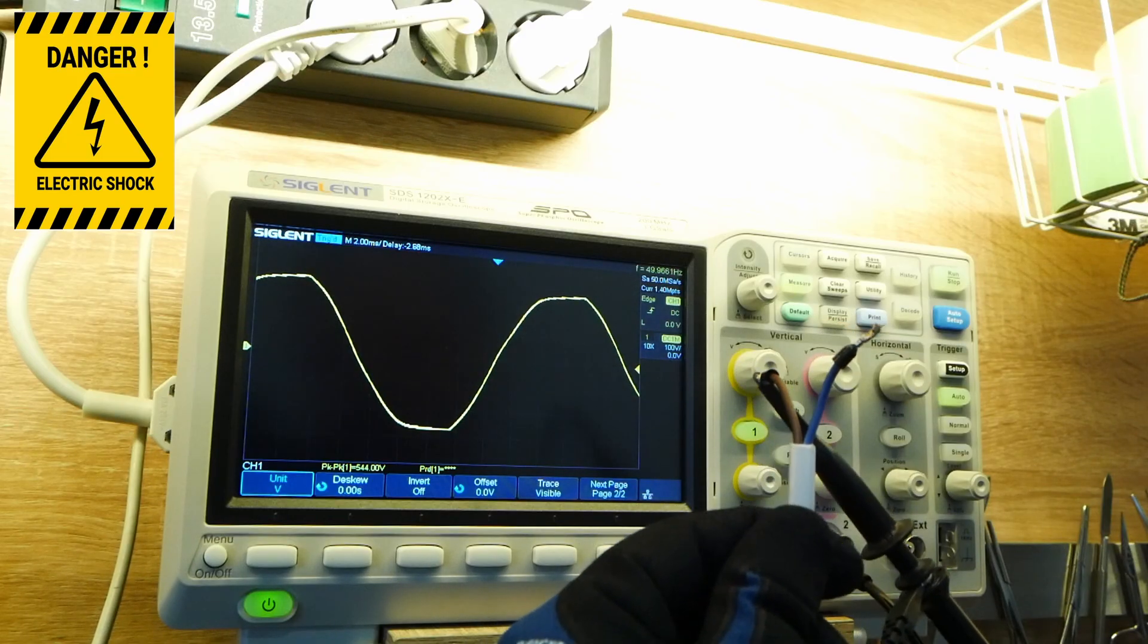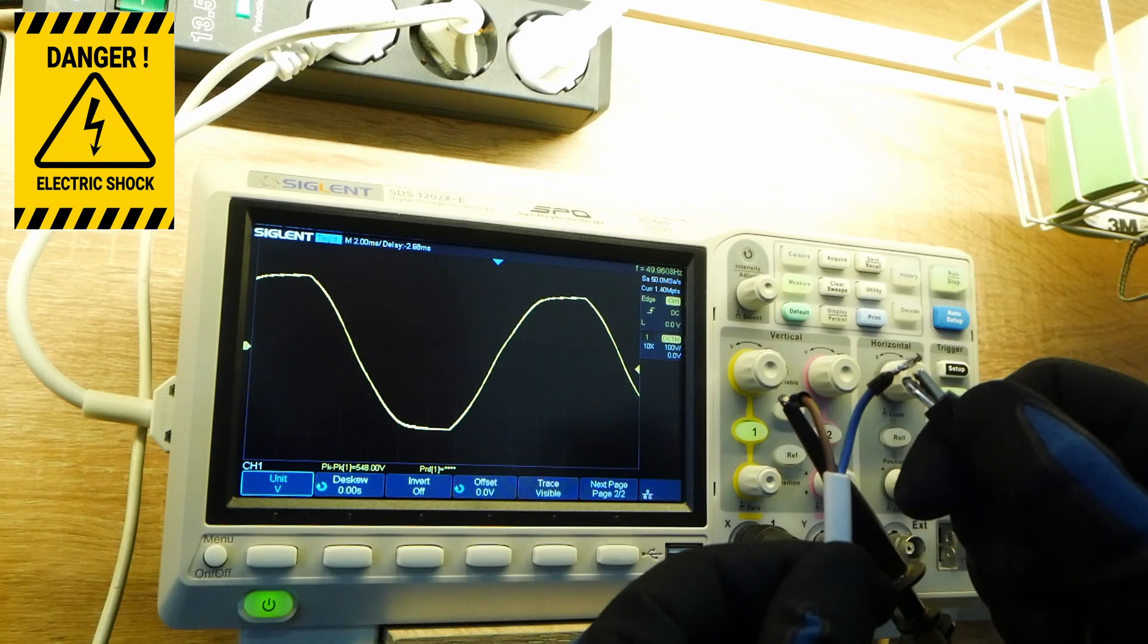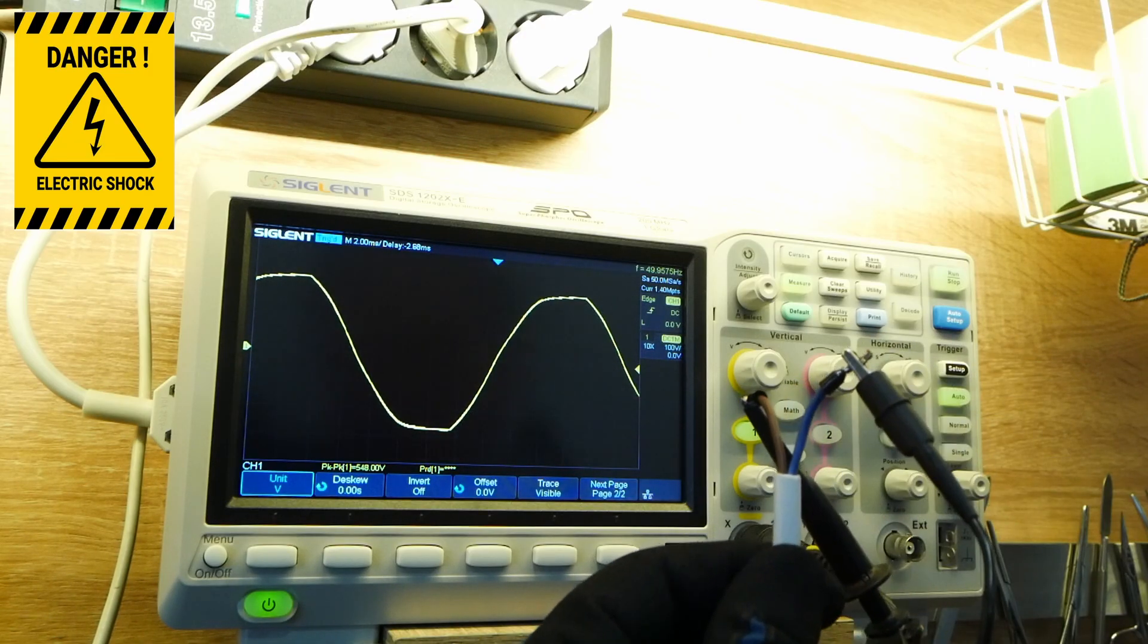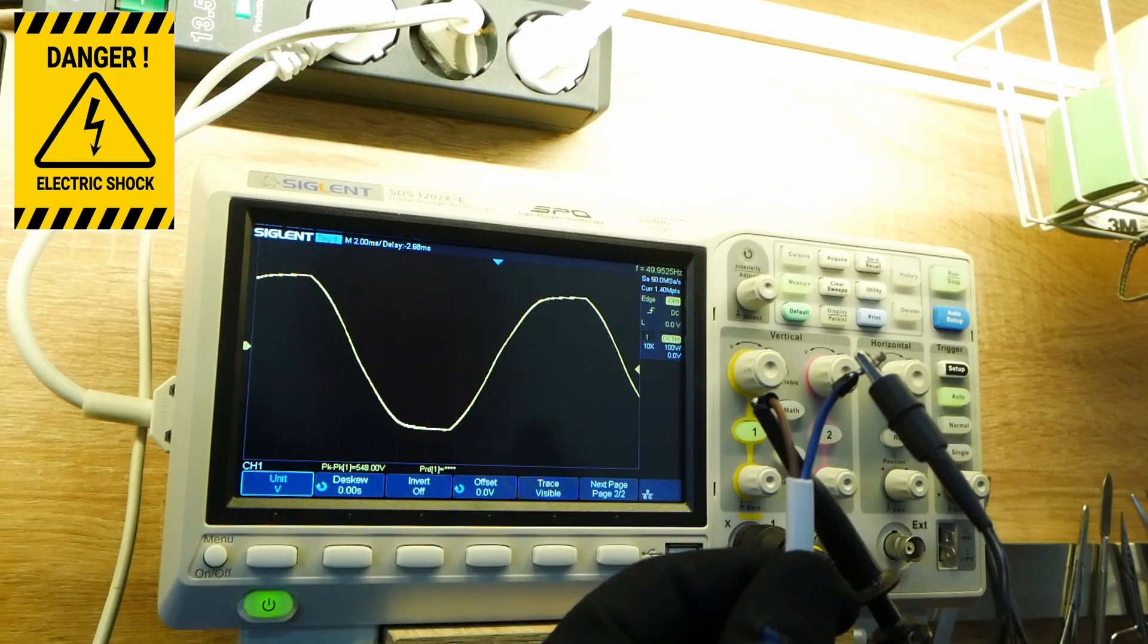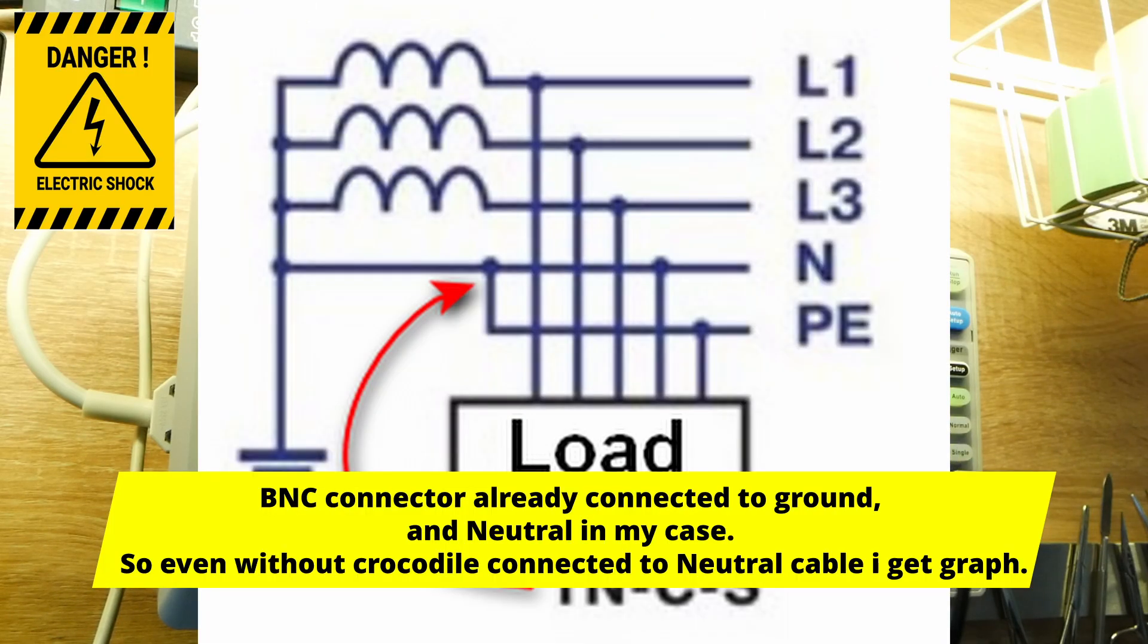So I don't even have to connect my crocodile wire on neutral, I will have a result immediately. And if I connect my crocodile wire on the ground wire, nothing will change because it's already connected in the electrical cabinet—neutral and ground connected to the same point.